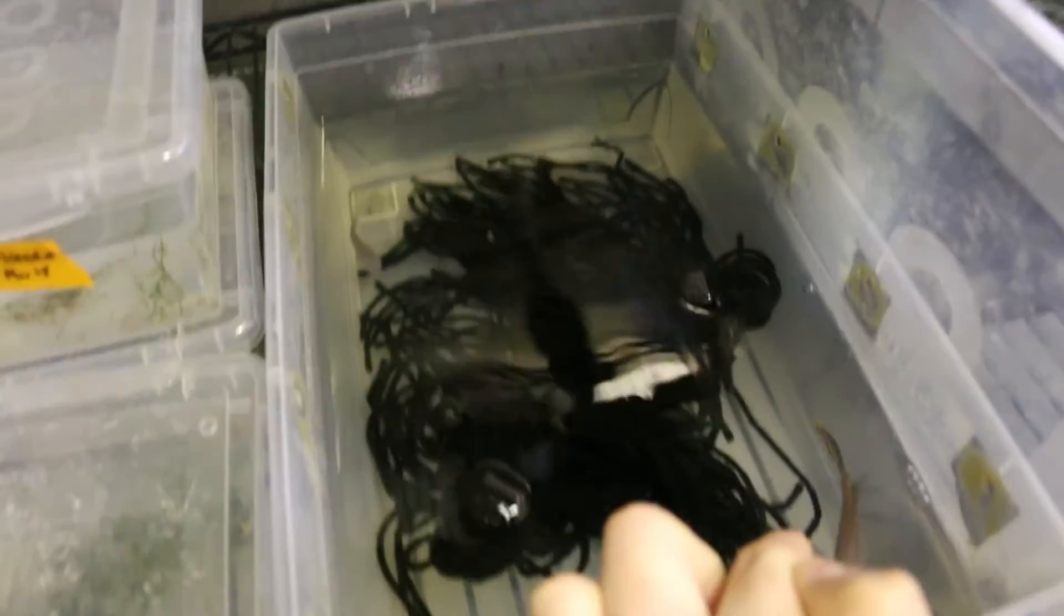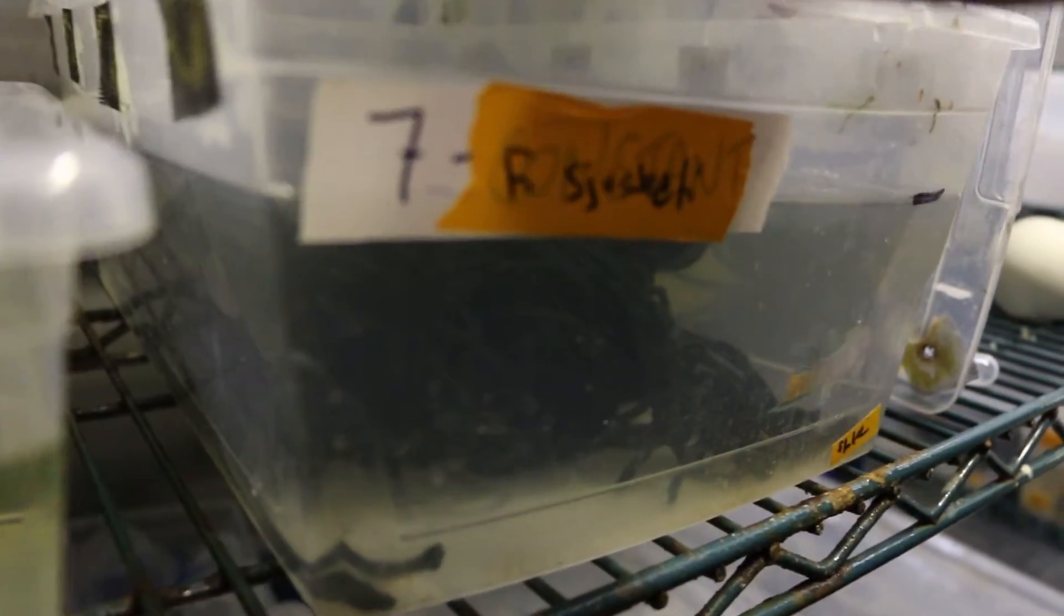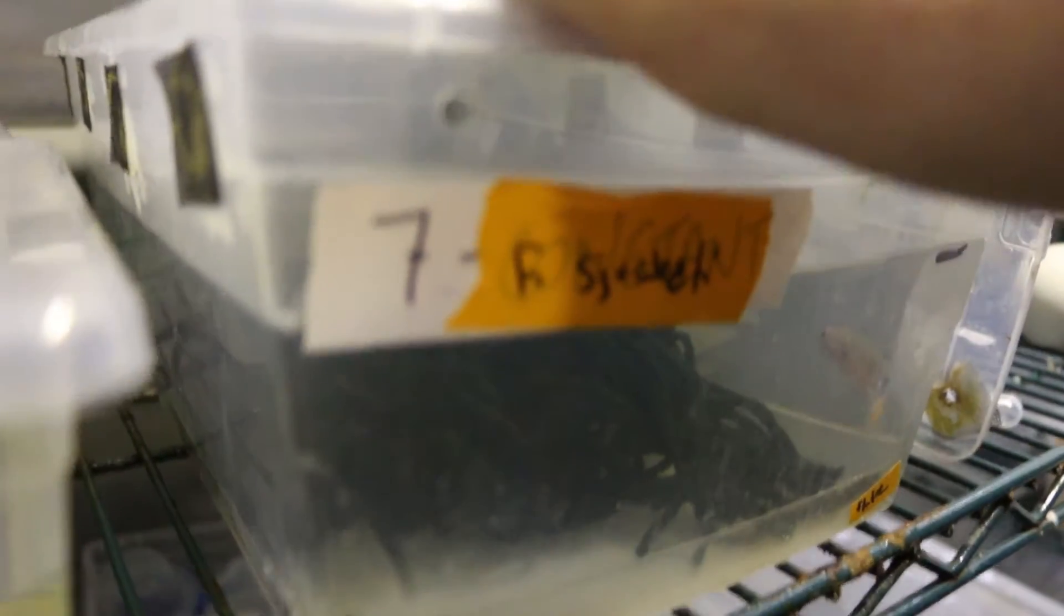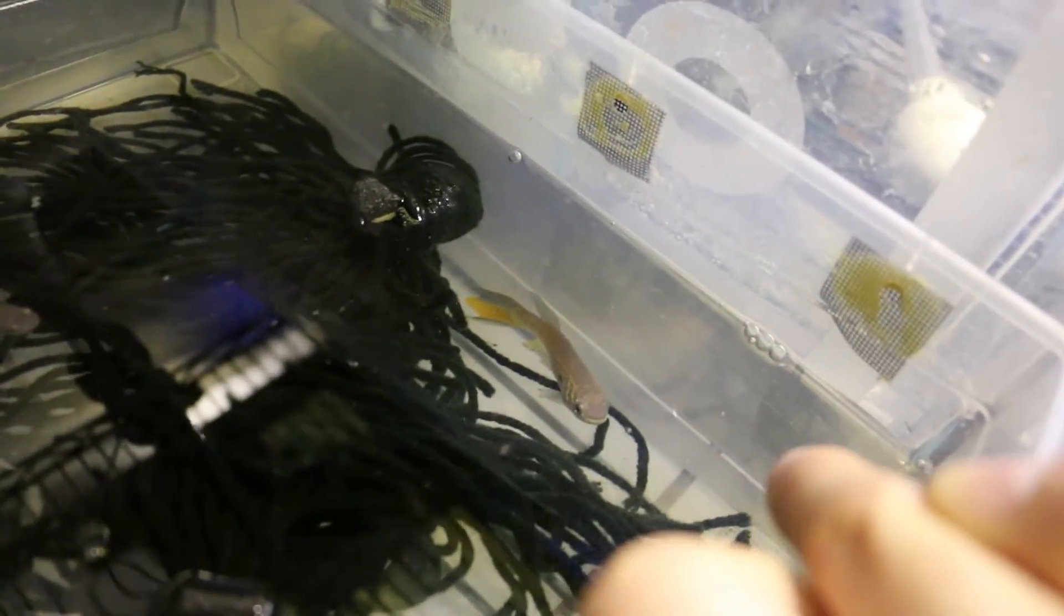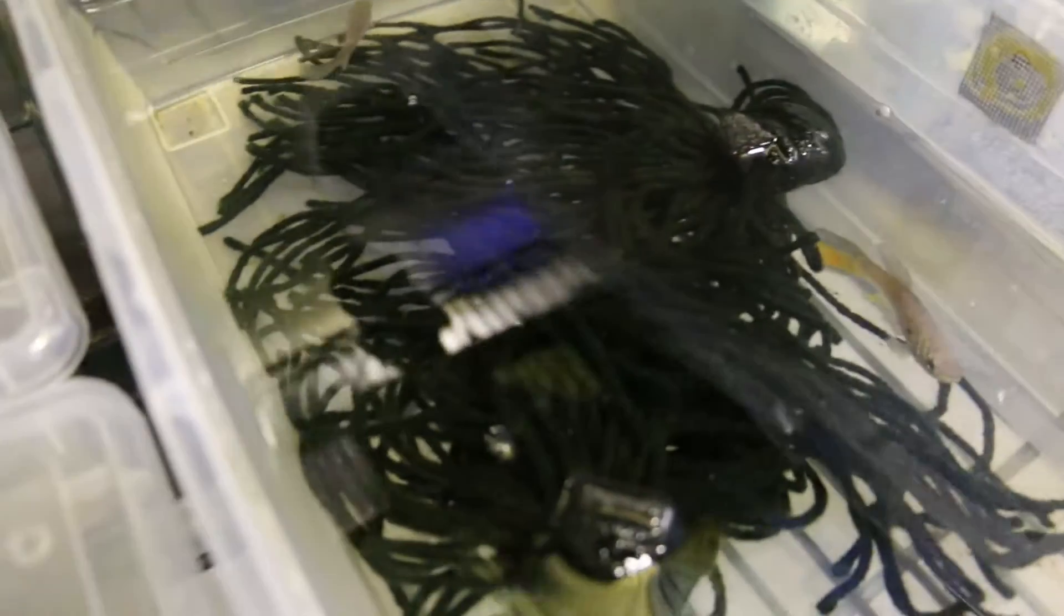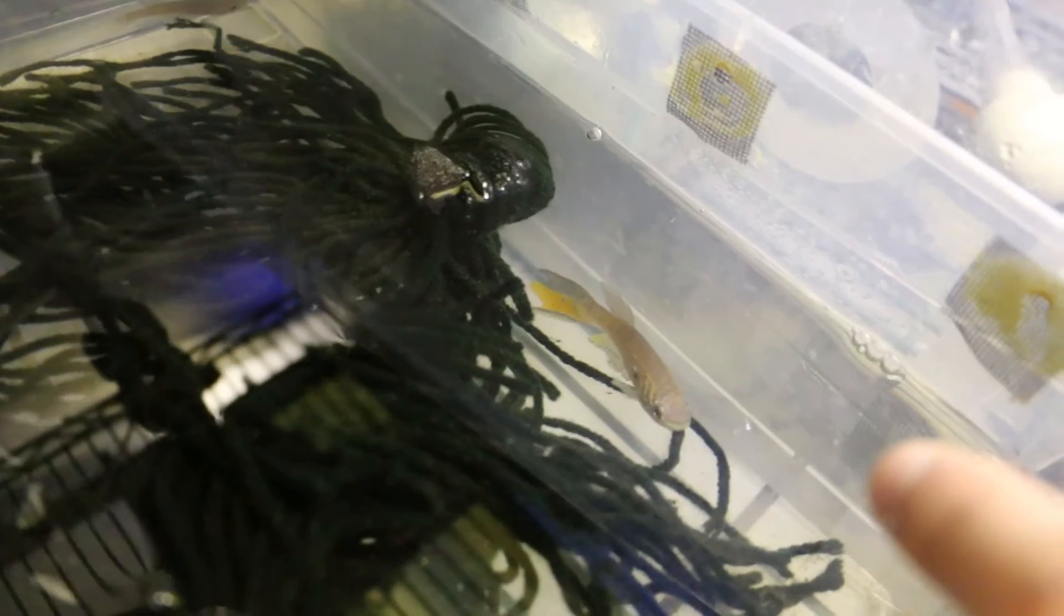So this is a Fundulopanchax sjoestedti pair. They are otherwise known as the Blue Gularis. They are a non-annual species of killifish native to Africa. And you can see the male there, he is very colorful, and the female there, she is rather drab. And they are much like many species of birds, where the male is brightly colored to attract the female, and the female is drab to make it easier to hide from predators.